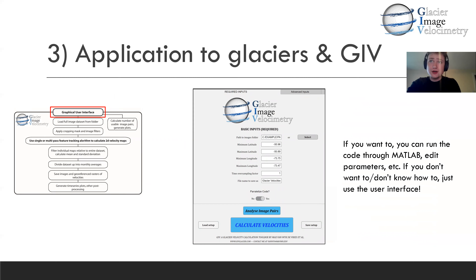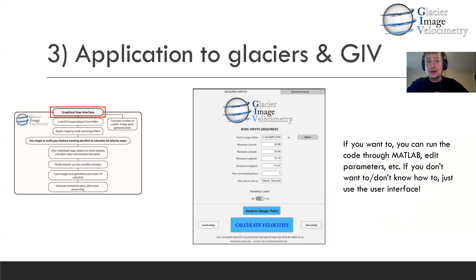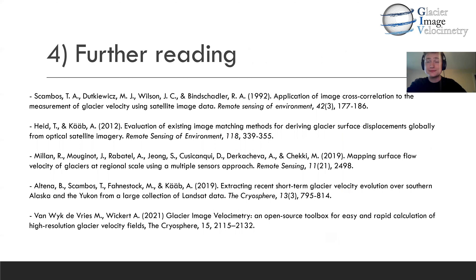You can open the graphical user interface through MATLAB, or run it as a standalone app. In either case, you don't need to know any coding to be able to use it. You can just enter your inputs and use your specific knowledge of how the glacier works and its changes through time to optimize the results, just by tweaking options within the graphical user interface.